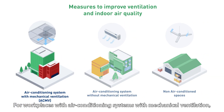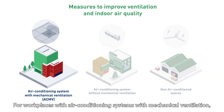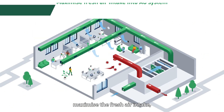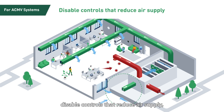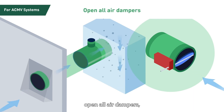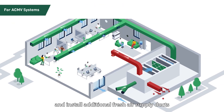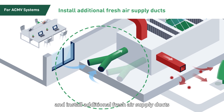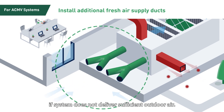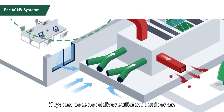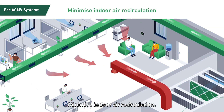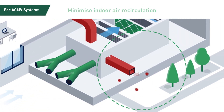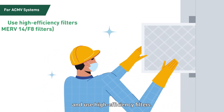For workplaces with air conditioning systems with mechanical ventilation, maximise the fresh air intake. Disable controls that reduce air supply. Open all air dampers and install additional fresh air supply ducts if the system does not deliver sufficient outdoor air. Minimise indoor air recirculation and use high efficiency filters.